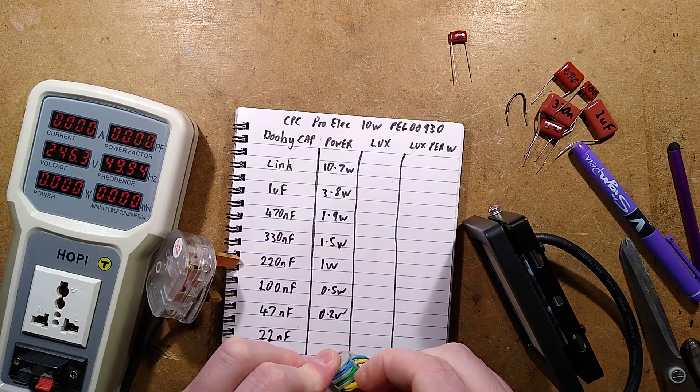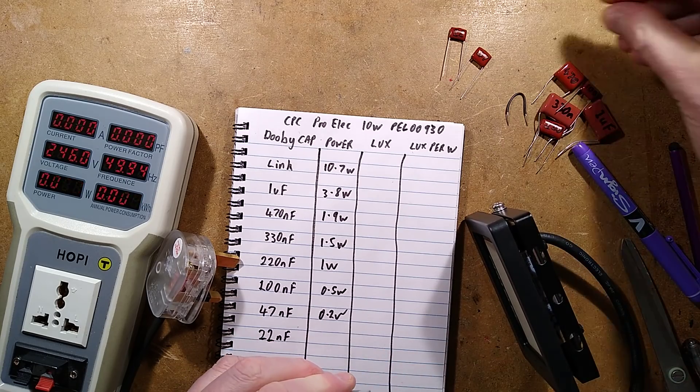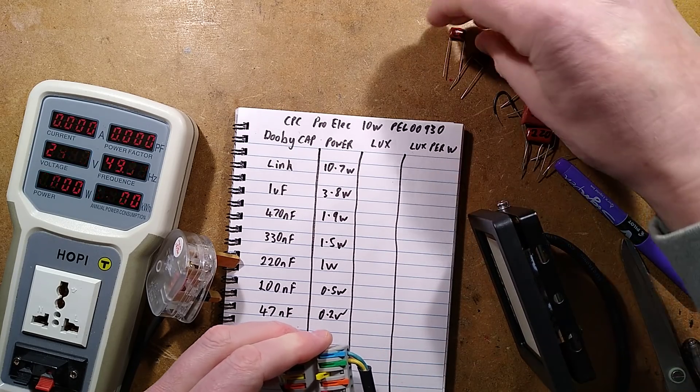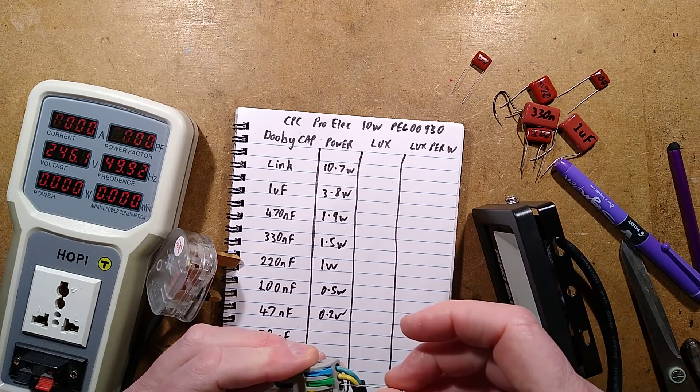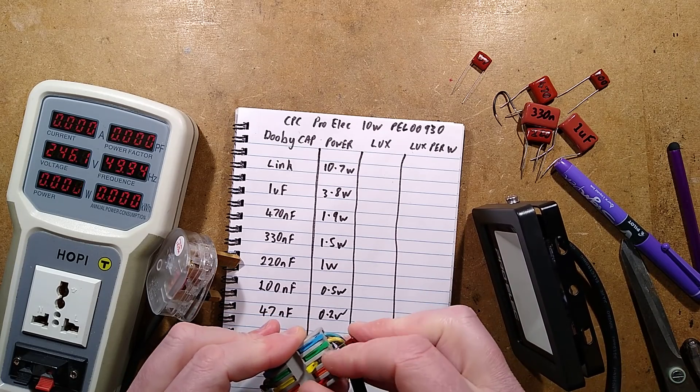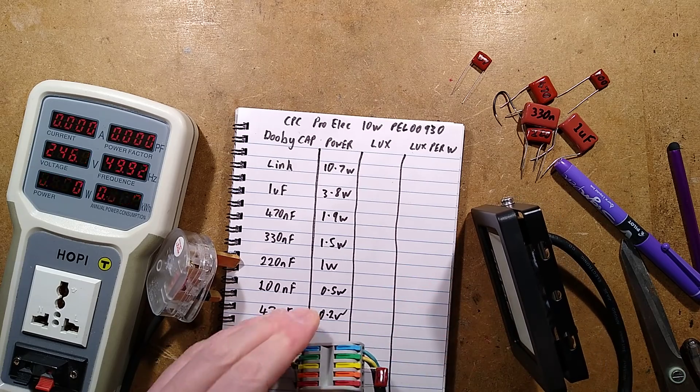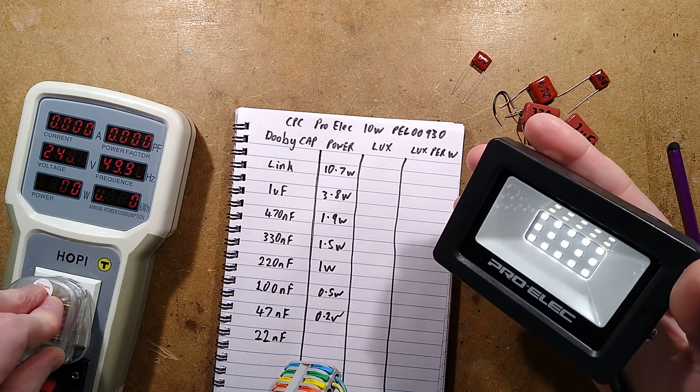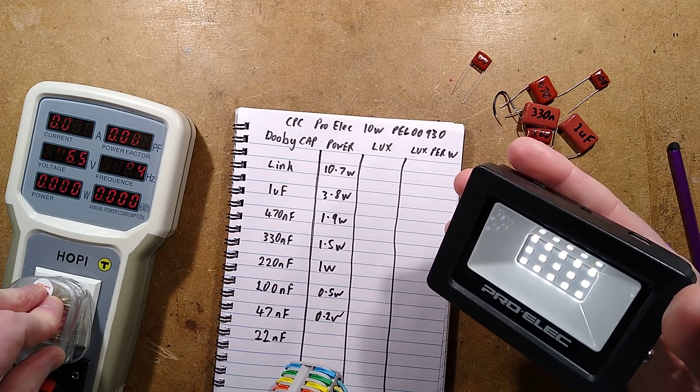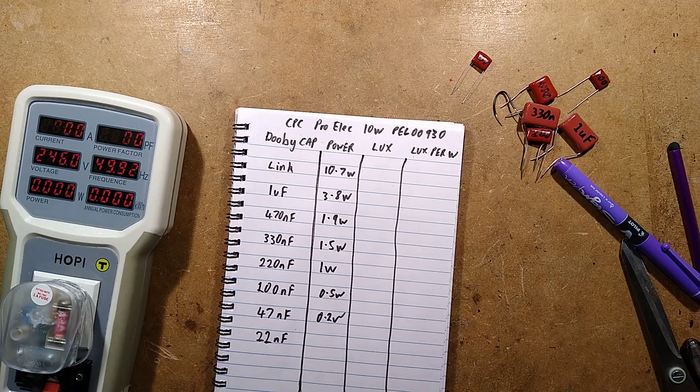That was unstable, though. I'm kind of tempted to stick the 100 nanofarad in and see if it was stable, because I didn't try that off camera. Well, let's try the 22 nanofarad first and see what happens. So, 22 nanofarads is minute. This is like leakage-type current. Oh, it's still lit. It is still lit.